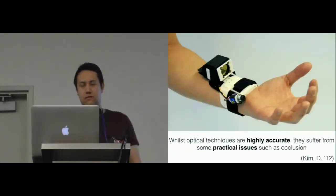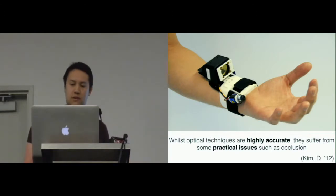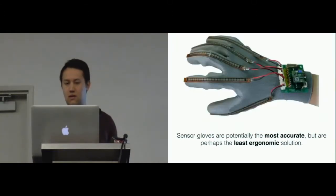Optical techniques, on the other hand, are very accurate, but they may not be entirely suitable for a mobile wearable system due to practical issues such as occlusion, so you can't wear things like sleeves. Sensor gloves are perhaps the most accurate solution, but you probably wouldn't want to wear this every day for long periods of time.